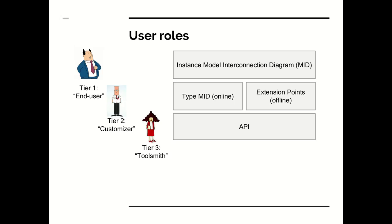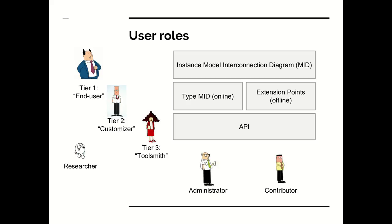We are going to structure this presentation from the perspective of usage of Mint. Specifically, we are going to talk about three different user roles: the tier 1 user, which is the end user; tier 2 user, which we call the customizer; and tier 3 user, which we call the toolsmith. We will also be talking about three additional peripheral roles: the perspective of someone who does research, the perspective of the administrator who manages a Mint installation, and the perspective of the contributor who contributes code to the Mint user base.